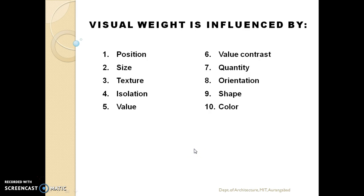Now what is this visual weight and how is it influenced? The visual weight is influenced by a number of factors: position, size, texture, isolation, value, value contrast, quantity, orientation, shape, and color. Let us see them one by one.